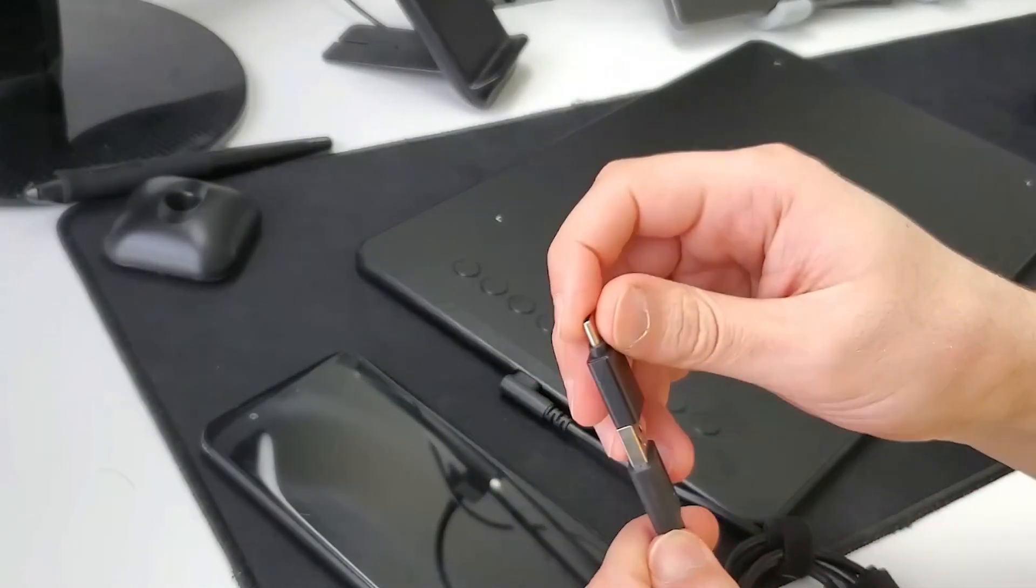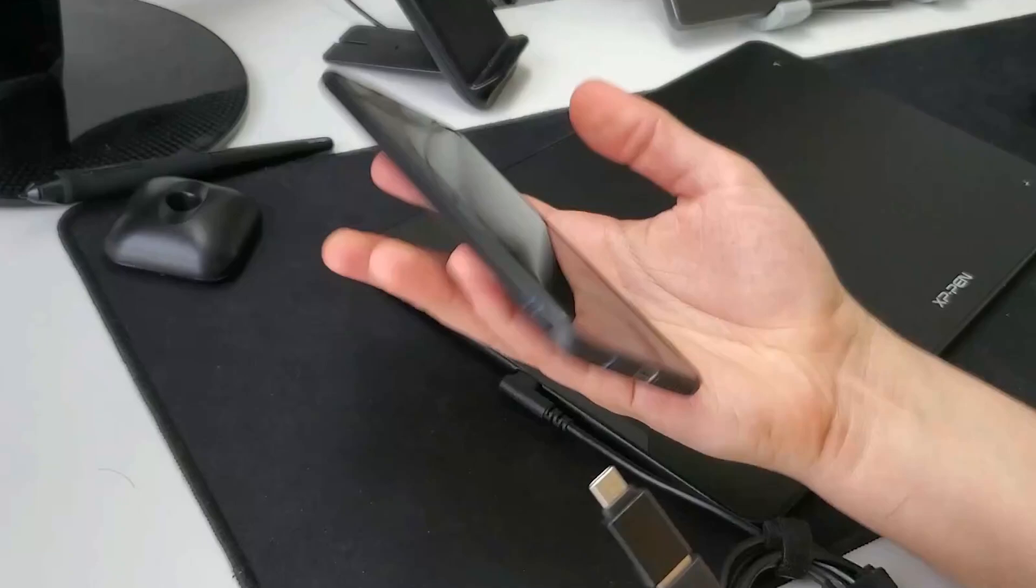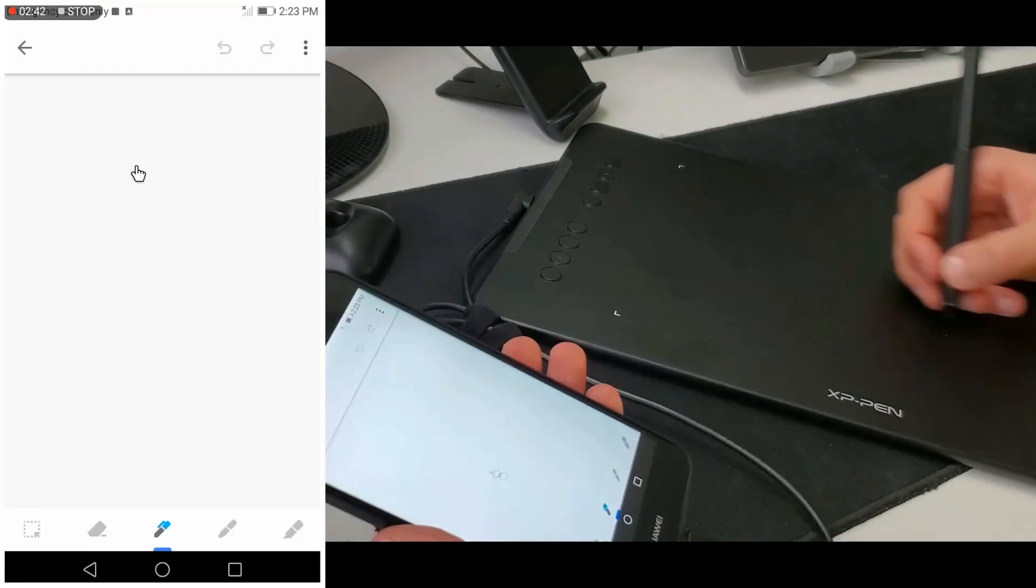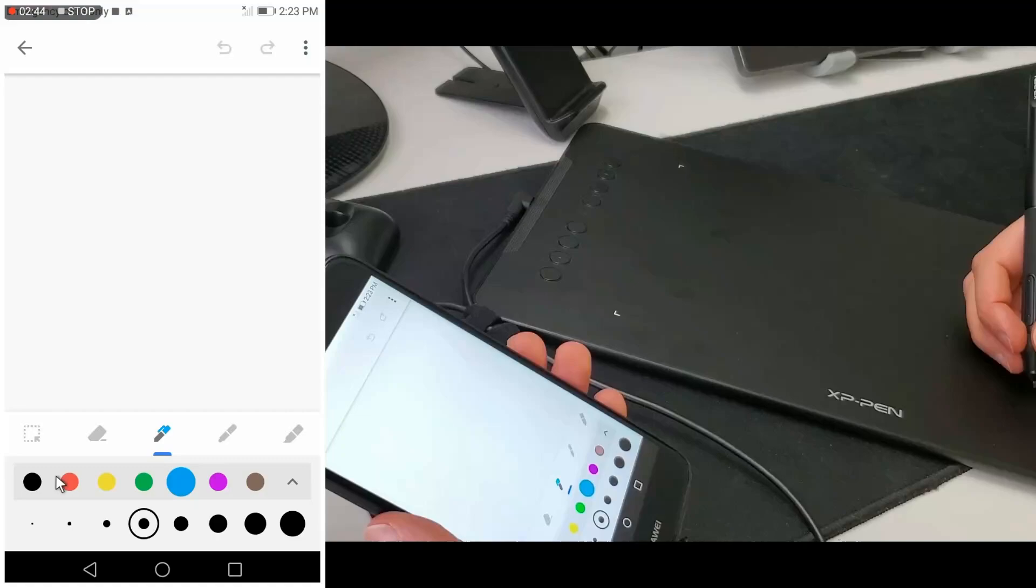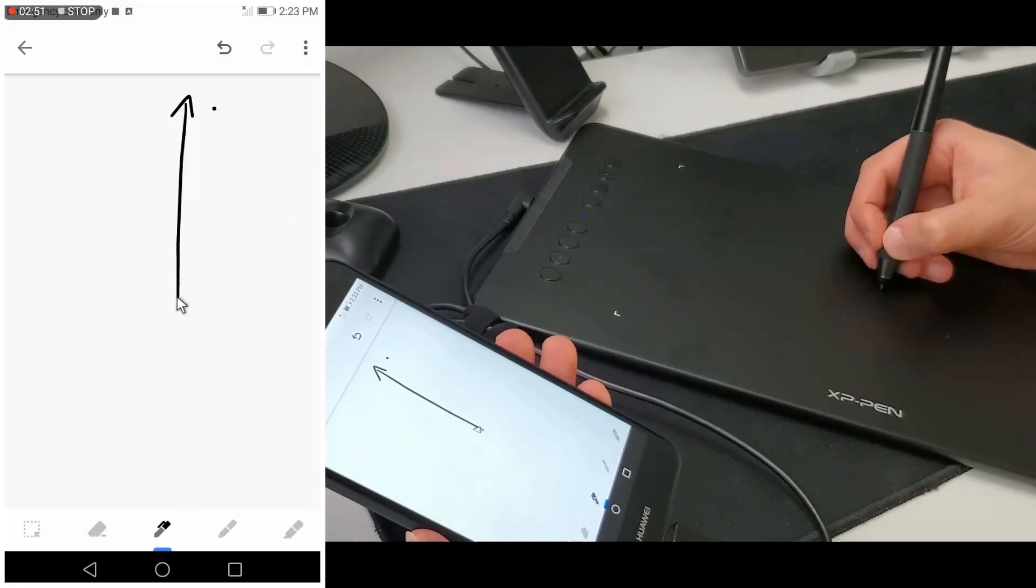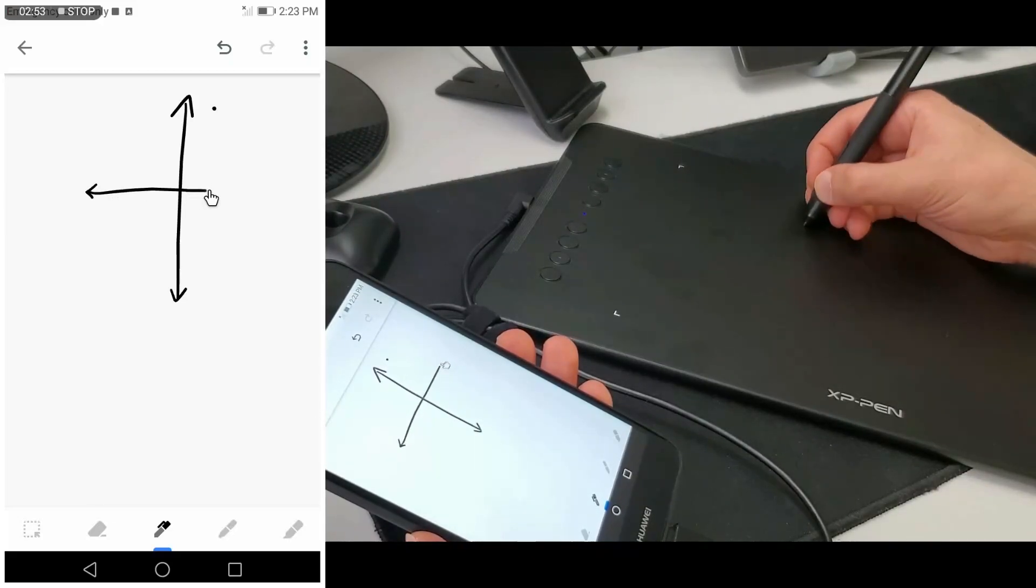And make the tablet vertical. It works just like that. And then use the note-taking software and start writing. I am using Google Keep to teach online with my smartphone.